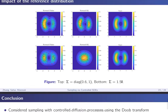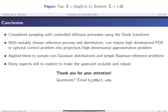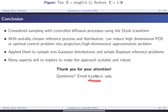To conclude: we considered sampling with controlled diffusion processes by considering the Doob h-transform. With a suitably chosen linear reference process and reference distribution, you can convert a really high-dimensional PDE problem or optimal control problem into just a projection or high-dimensional function approximation problem. We applied the approach to simple non-Gaussian distributions and simple Bayesian inference problems, and identified many aspects not yet explored that will hopefully make the approach more scalable and robust. Thank you for your attention. If you have any questions, please feel free to email me at bjz@mit.edu.